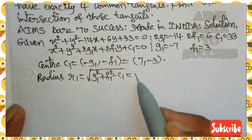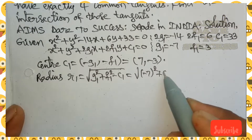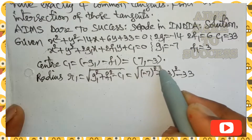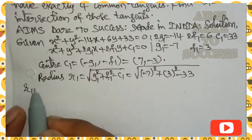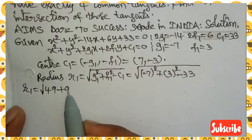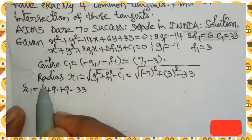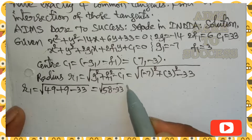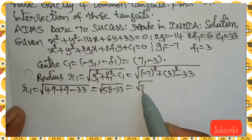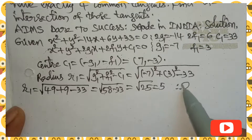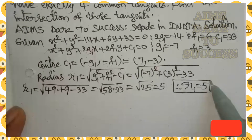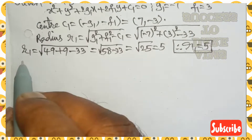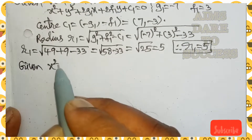The radius formula is r = √(g² + f² - c). For the first circle: r₁ = √(g₁² + f₁² - c₁) = √((-7)² + 3² - 33) = √(49 + 9 - 33) = √25 = 5. So radius r₁ = 5.